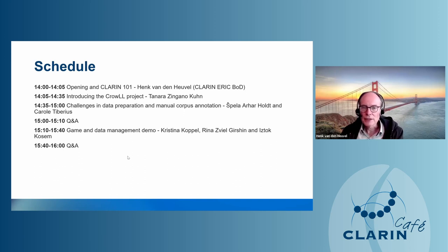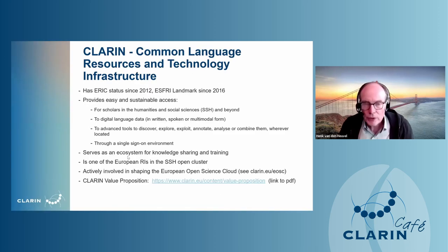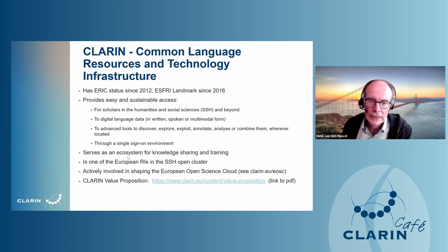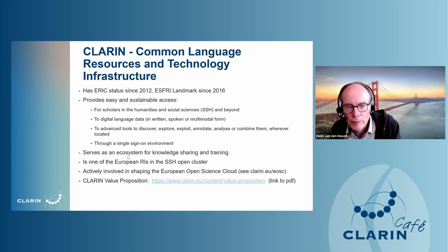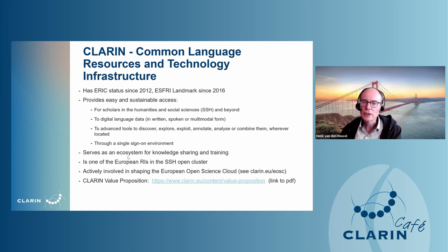CLARIN stands for Common Language Resources and Technology Infrastructure. We have had ERIC status since 2012 and are an ESFRI landmark since 2016. We provide easy and sustainable access for scholars in the humanities and social sciences to language data in written, spoken, or multimodal form, and to advanced tools to explore the data.